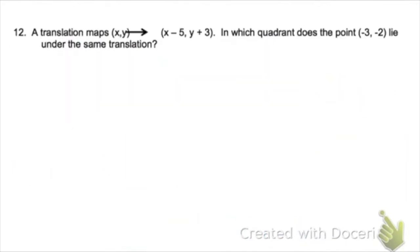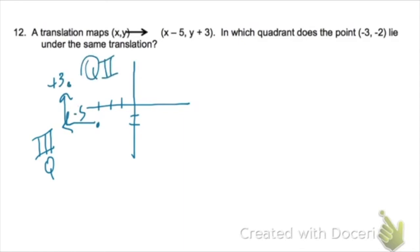A translation that maps (x,y) onto (x-5, y+3) means it's going back 5 and up 3. So if we apply that to this other point (-3,2), if we go back 5 and up 3, it goes into quadrant 2.